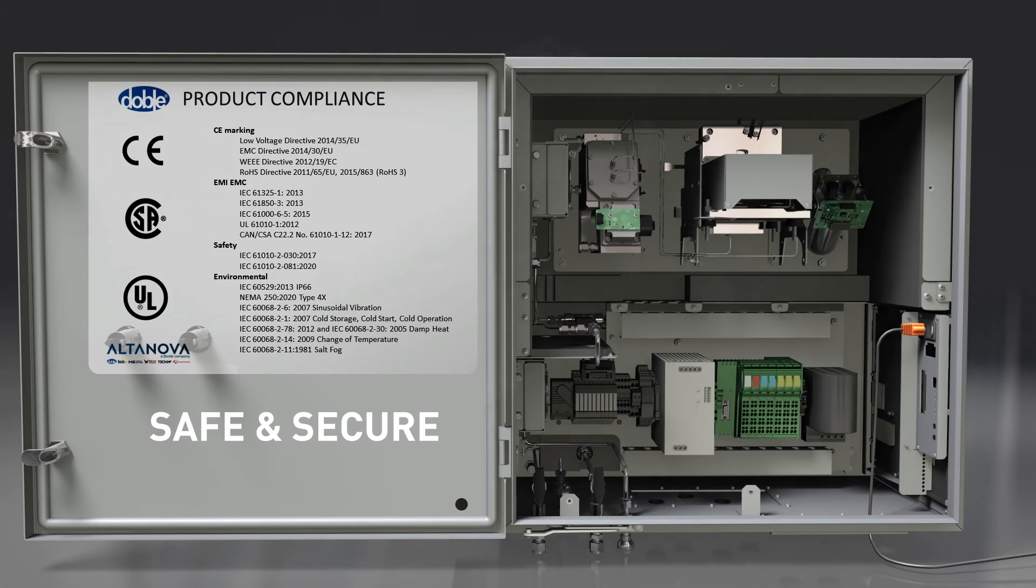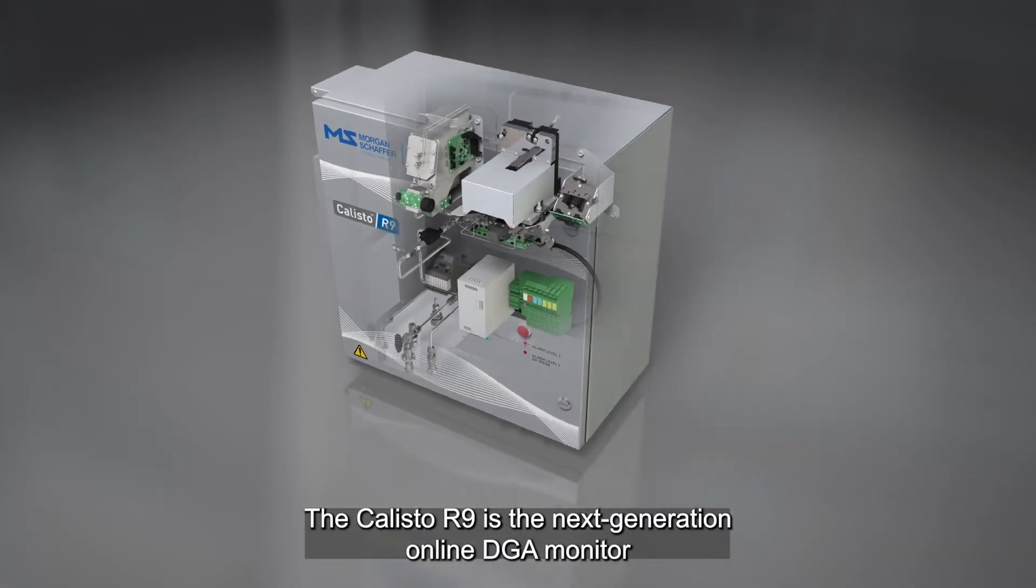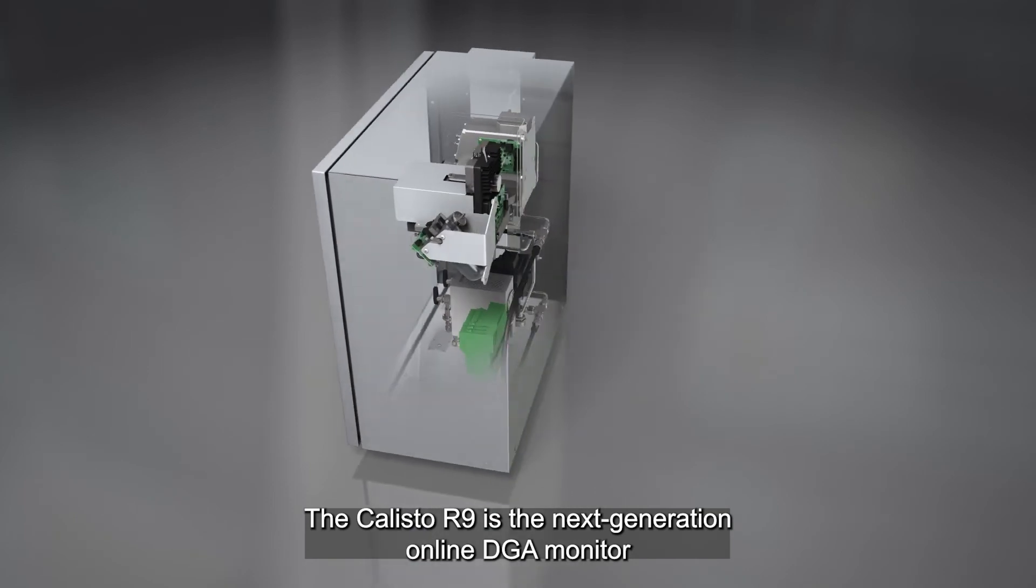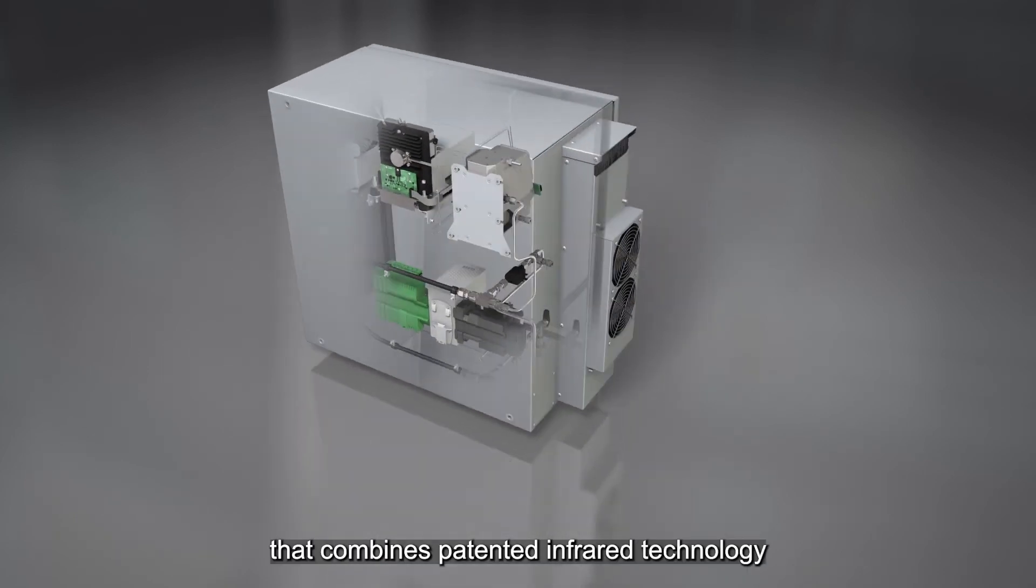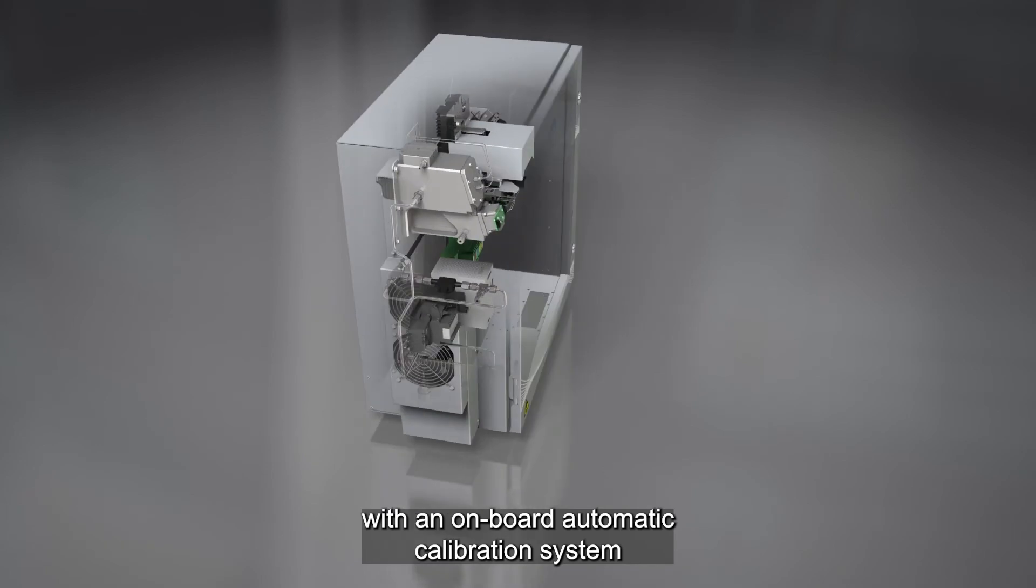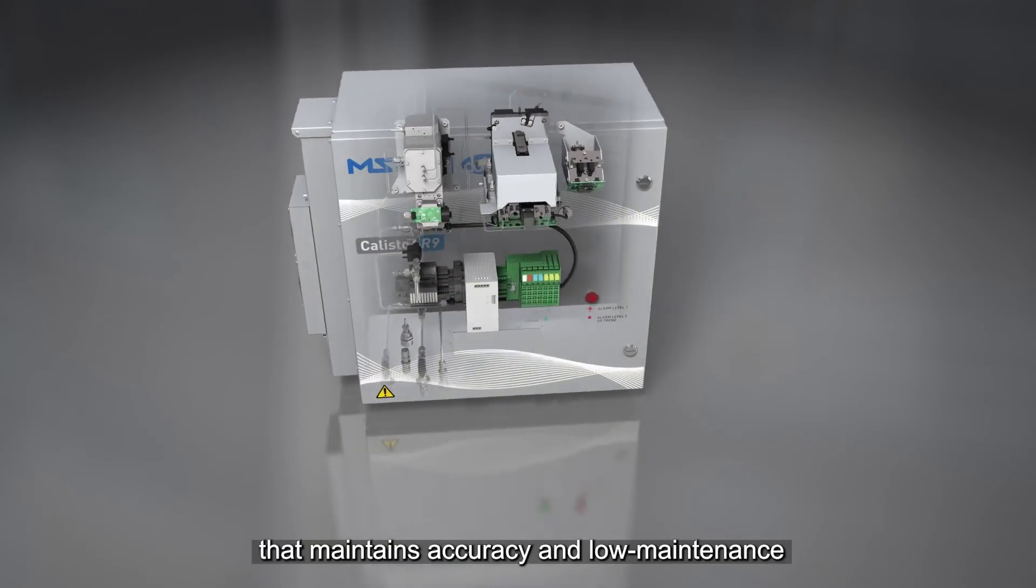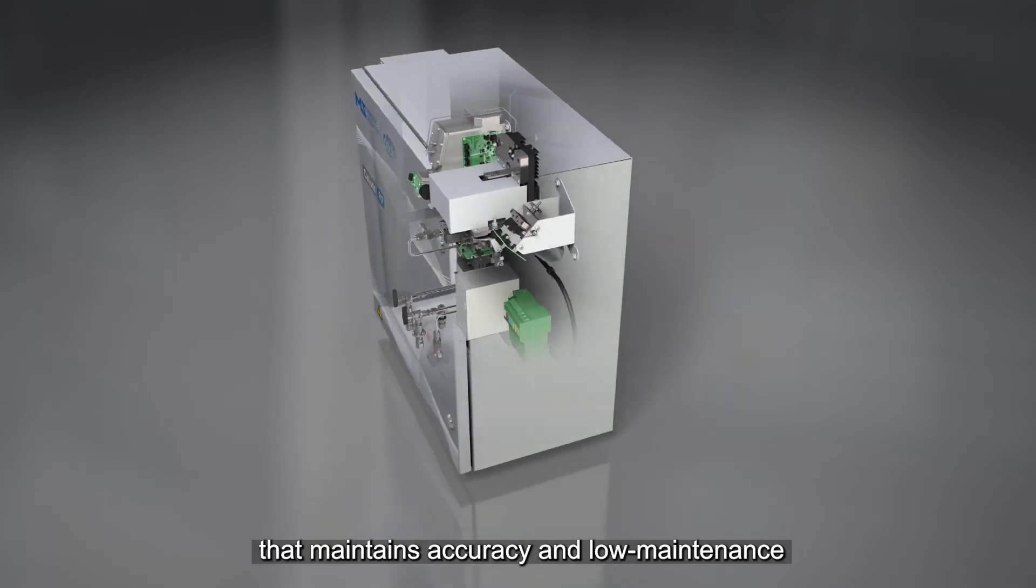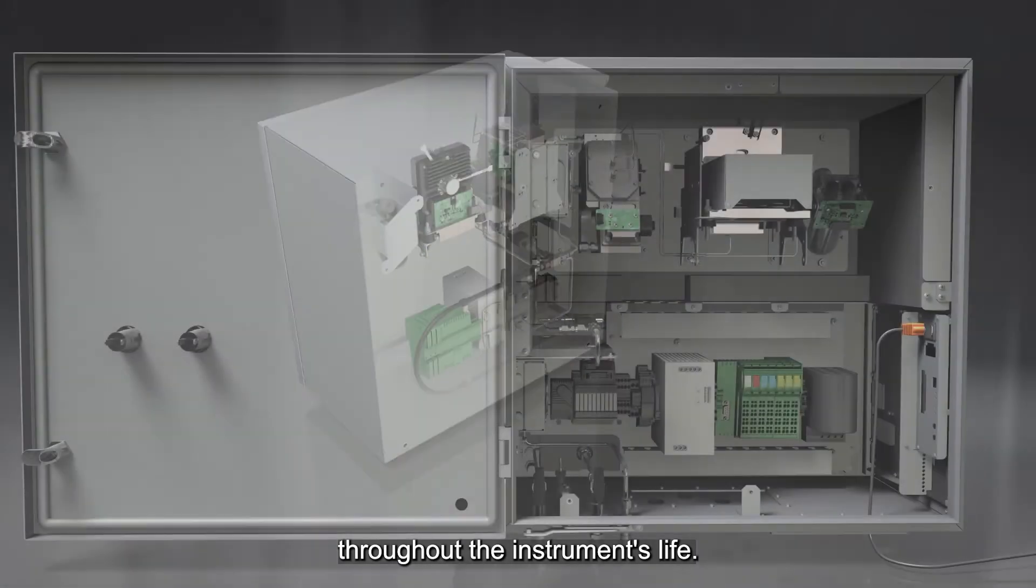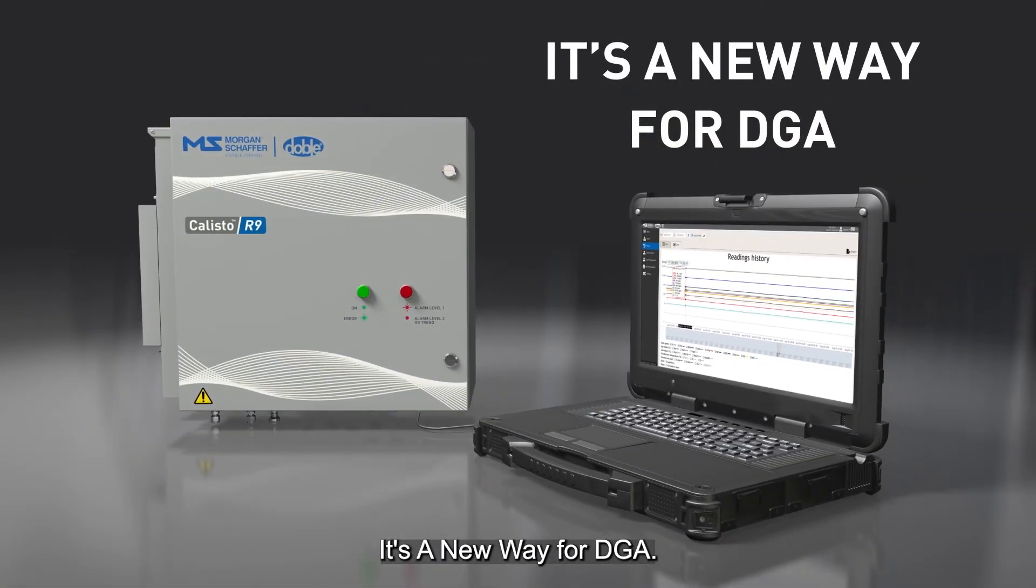The Callisto R9 is the next generation online DGA monitor that combines patented infrared technology with an onboard automatic calibration system that maintains accuracy and low maintenance throughout the instrument's life. It's a new way for DGA.